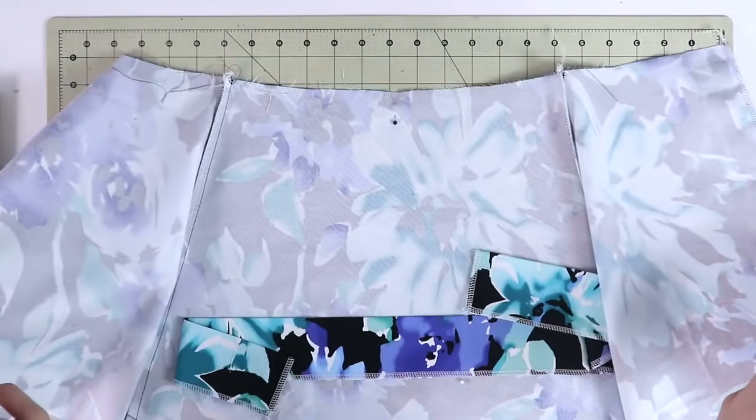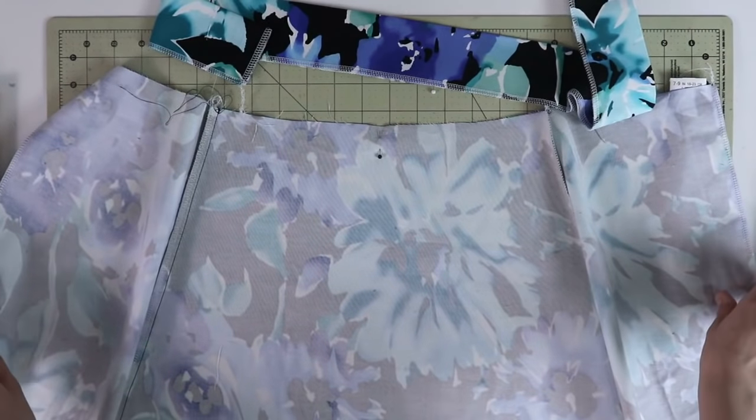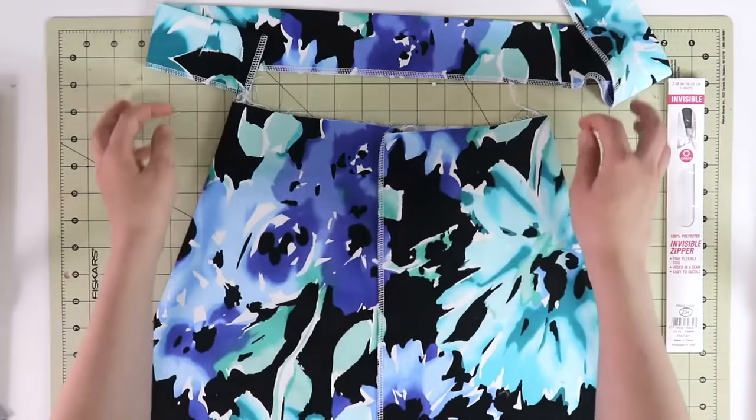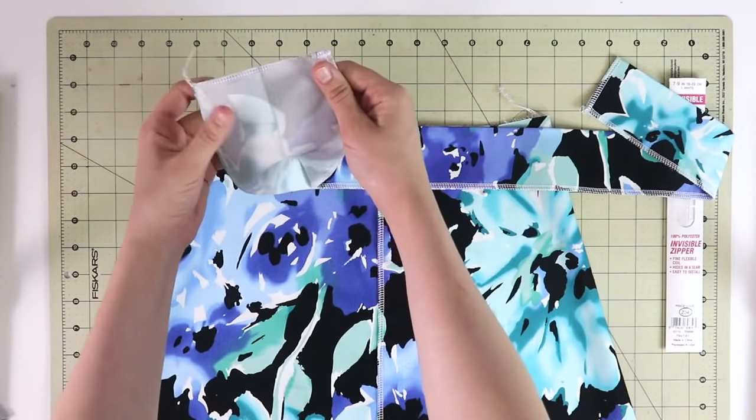Now first, let's take a look at what we're working with. Here I have an A-line skirt with one front panel and two back panels. I also have a waistband that I'm going to attach to the top of the skirt.